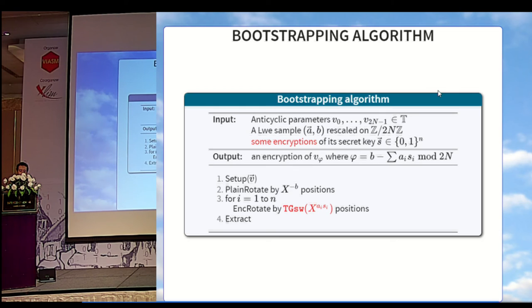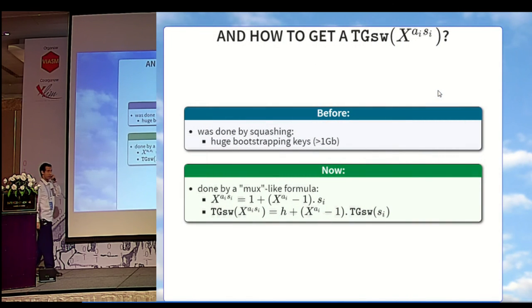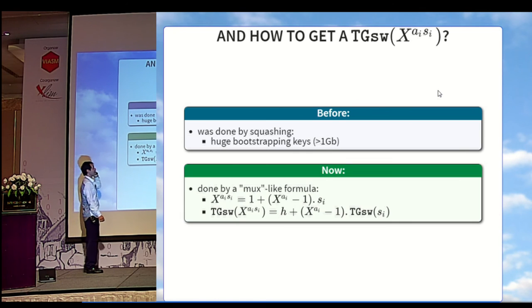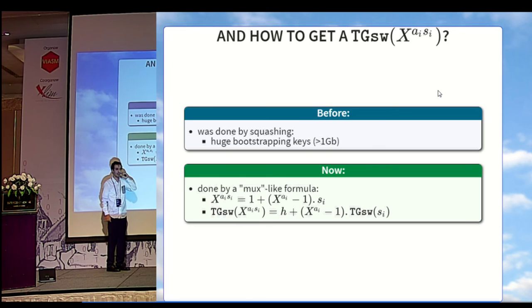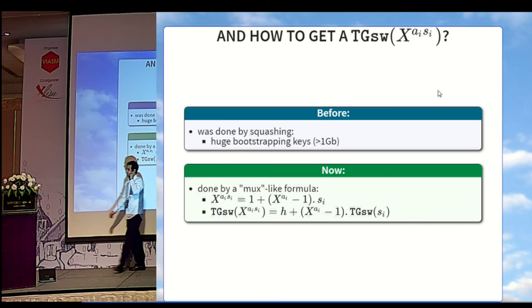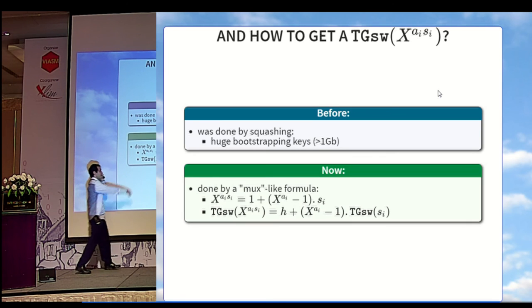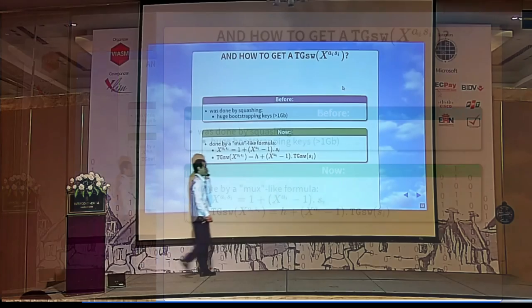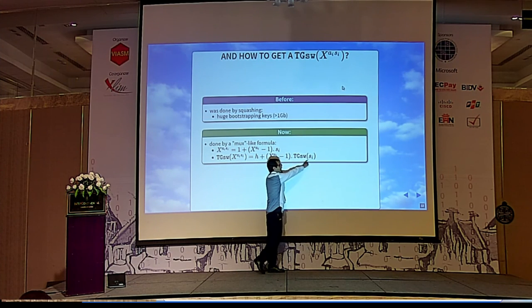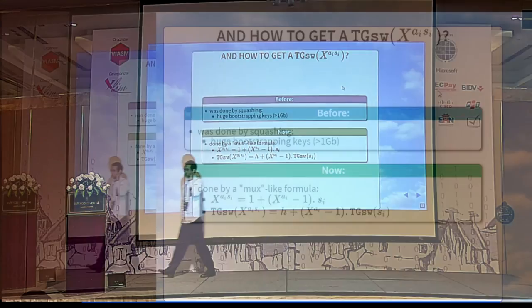Last question. How do we get an encryption of x to the si ai si? Before, it was done by squashing, which required a huge bootstrapping key, larger than 1 gigabit. Now, we will do it with a mux-like formula, which you can verify for both values 0, 1 of xi. Since this formula is linear, you can encrypt them with GSW. Overall, the only thing you need for the bootstrapping key is an encryption of the bits of the secret key.